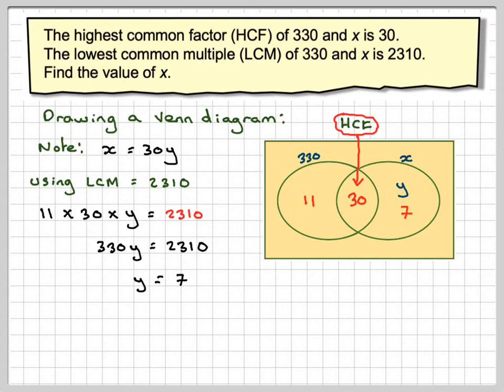Now remember that x is equal to 30 times y, so it's 30 times 7. So my number x is going to be 30 times 7, which is 210.